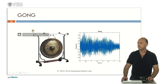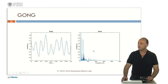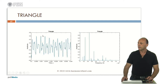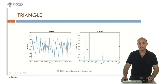This is the gong. The triangle, with an indefinite pitch, so the spectrum is not a harmonic series. The triangle — now the spectrum contains well-defined lines, but they don't form a harmonic series, because these lines are not multiples of one of them.